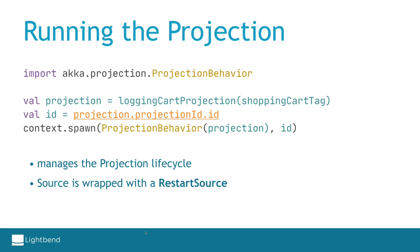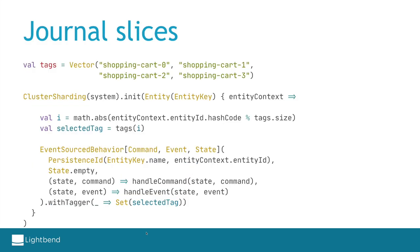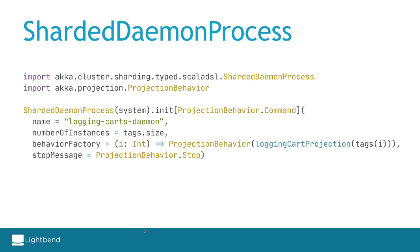While it's possible to run a projection on a single actor, this is not ideal. First, that single projection would be responsible for processing all shopping cart events. Second, if you deploy two or more nodes you duplicate the projection and end up with multiple instances doing exactly the same work. A better approach is to slice the journal using different tags, creating as many projection instances as tags. Revisiting the shopping cart behavior, we now have four different tags and tag events using the entity ID hash code modulo the number of tags. Some events will be tagged 'shopping-cart-0', others 'shopping-cart-1', and so on — creating virtual slices or buckets in the journal, with four projections each querying one tag.